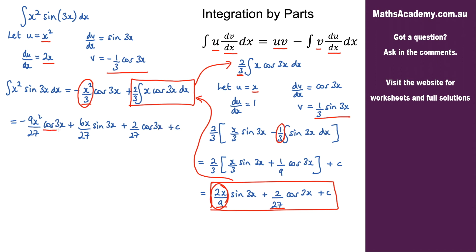I notice I have a common factor of cosine of 3x. So the final answer is 2 minus 9x squared times cosine of 3x plus 6x sine of 3x, all over 27, plus the constant of integration.